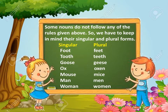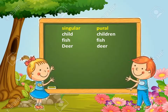Some nouns do not follow any of the rules given above, so we have to keep in mind their singular and plural form. For example: foot → feet, tooth → teeth, goose → geese, ox → oxen, mouse → mice, man → men, woman → women, child → children, fish → fish, deer → deer.